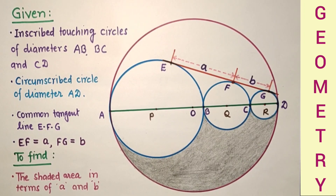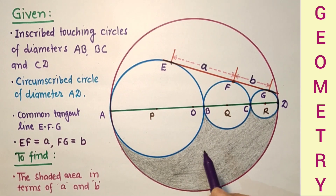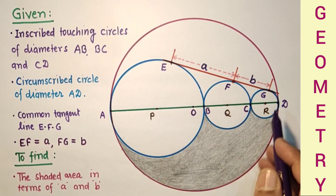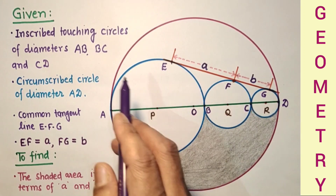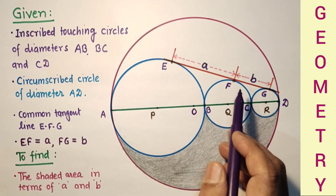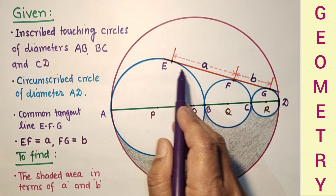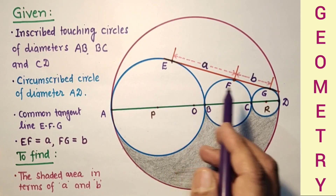Hello friends, dear students and my respected viewers. Welcome to my channel. The question is from gogeometry.com website. In this question we are given that three circles are touching according to the diagram, and this is the direct common tangent which touches all three circles. We are given that this part is B and this part is A. We have to find the shaded area in terms of A and B.